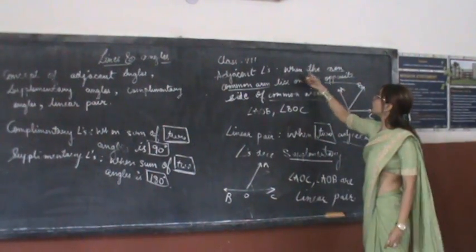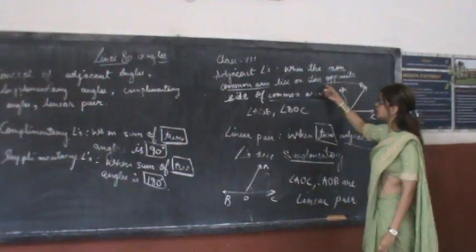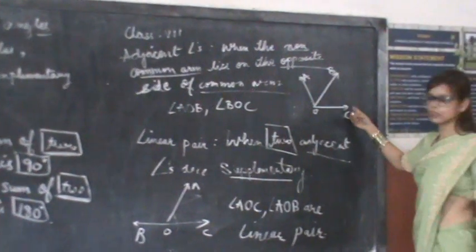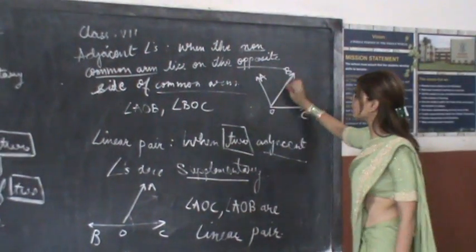Adjacent angles: when the non-common arm lies on the opposite side of common arm. Look at the figure. This is angle AOC where BO is the common arm.